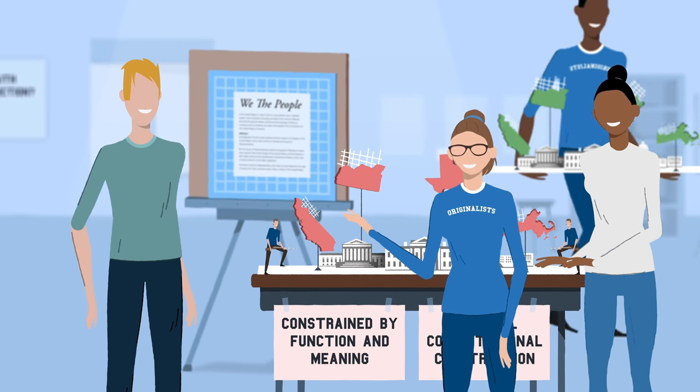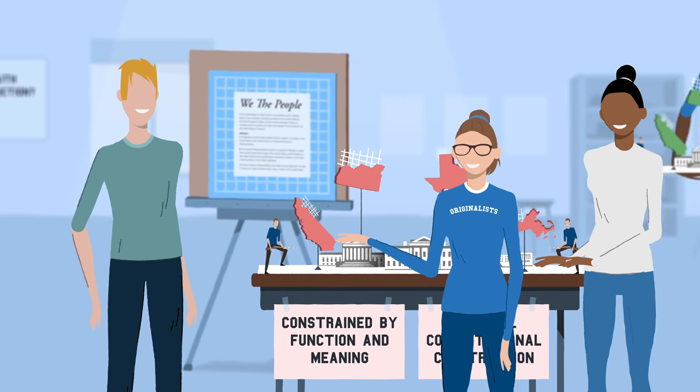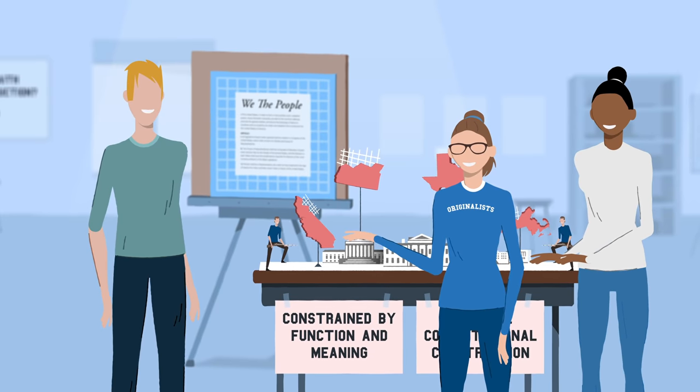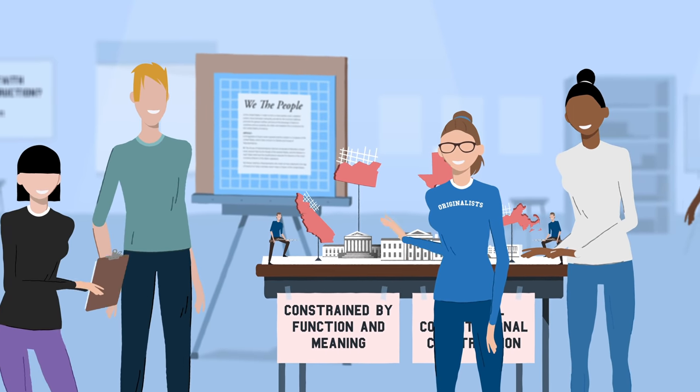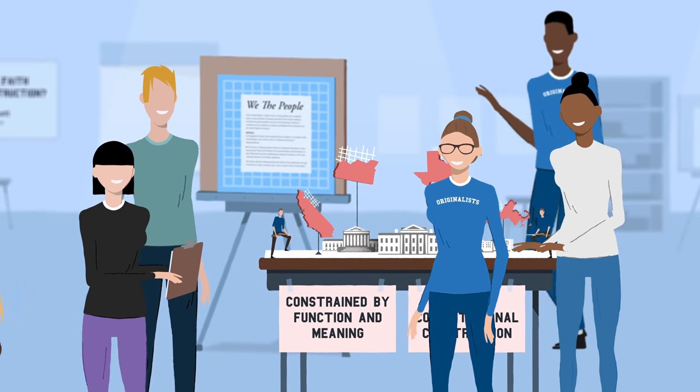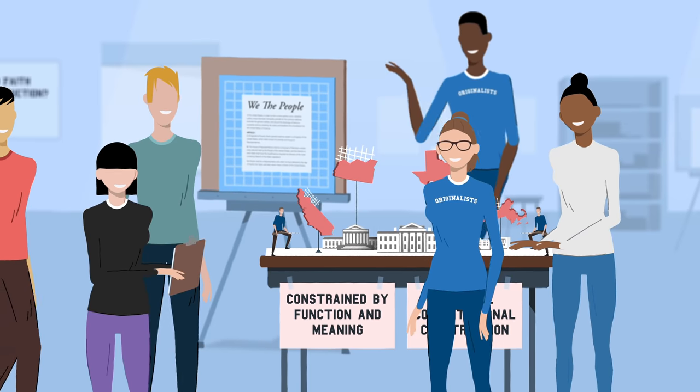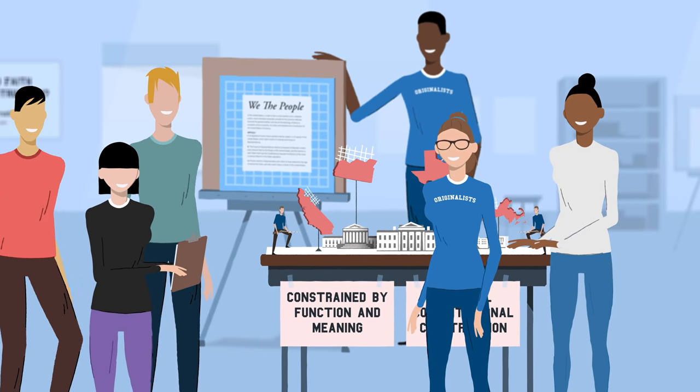Where the Constitution speaks in broader or more general terms, you need implementing doctrines to apply that text to particular cases and controversies so judges may treat like cases alike. The activity of developing those intermediary doctrines to apply the text to cases is constitutional construction, whether people want to call it that or not.